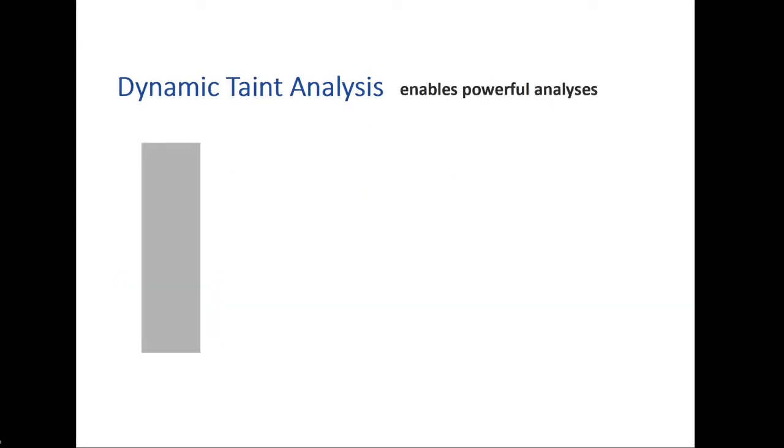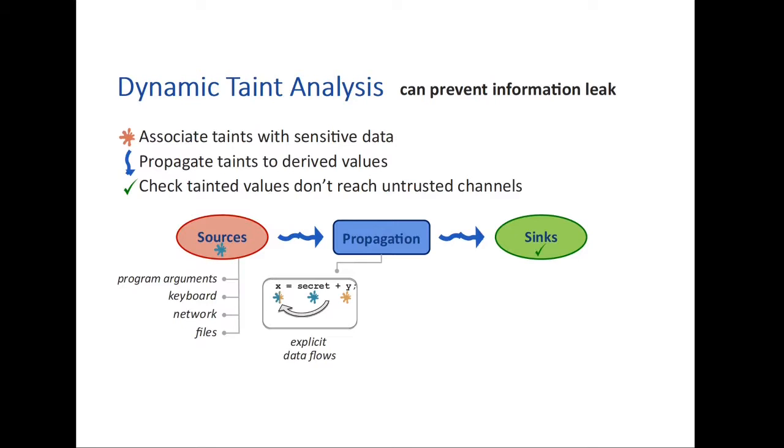The final component is sinks. Sinks are basically program locations such as instructions, functions, and methods where we should control the state of taints. For example, data being sent over the network shouldn't contain certain type of taints, for example, malicious commands or any private data.